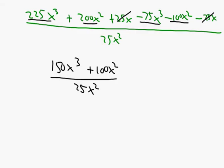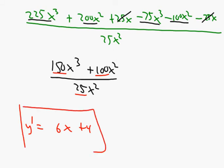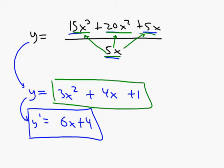Combining like terms: 225x cubed minus 75x cubed gives 150x cubed. 200x squared minus 100x squared gives 100x squared. The 25x terms cancel completely. Dividing by 25x squared: 150 divided by 25 is 6 and x cubed over x is x, giving 6x. Then 100 divided by 25 is 4 and x squared cancels, giving plus 4. So y prime equals 6x plus 4 — which matches our earlier answer. The quotient rule works.